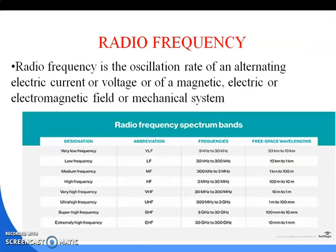Next is radio frequency. Radio frequency is the oscillation rate of an alternating electric current or voltage, or of a magnetic, electric, or electromagnetic field, or mechanical system. The spectrum is divided into different range bands having specific radio frequency ranges. Frequency refers to oscillation — the sinusoidal movement of an alternating electric current, voltage, or electromagnetic field.